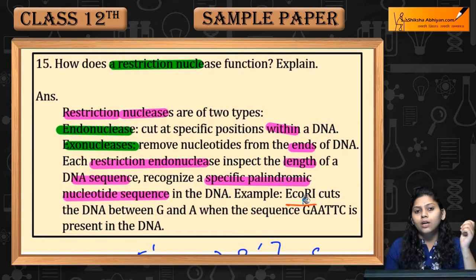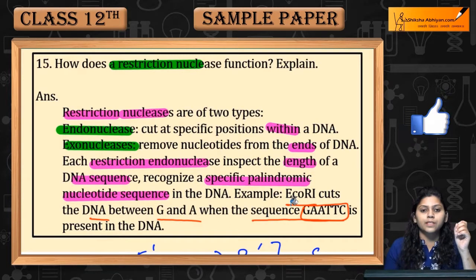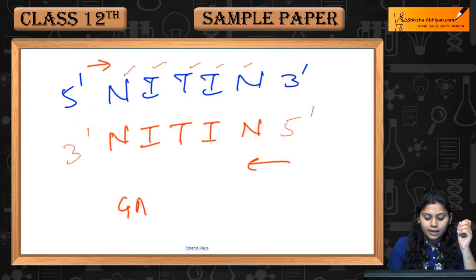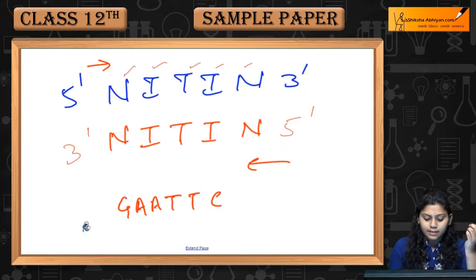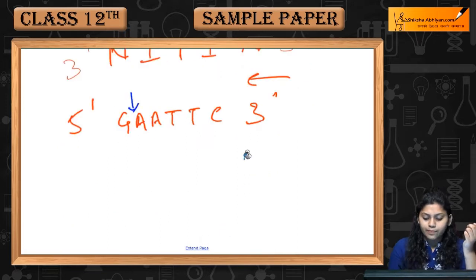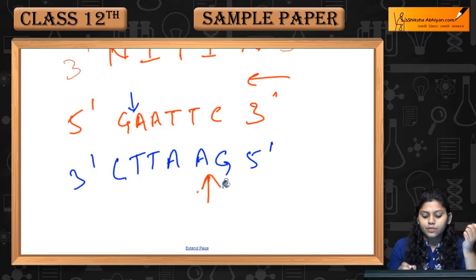Example है — EcoRI cut करेगा DNA को between G and A, when the sequence G-A-A-T-T-C is present in the DNA, 5' to 3'. कट कहां करेगा? In between G and A, 5' to 3', जब sequence G-A-A-T-T-C हो।